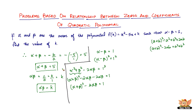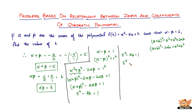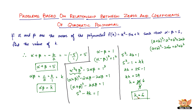So we substitute: (alpha + beta)² - 2·alpha·beta - 2·alpha·beta = 1, which gives (alpha + beta)² - 4·alpha·beta = 1. The reason we do this is we have the values of alpha + beta and alpha·beta. Alpha + beta is 5, so 5² - 4·k = 1, which gives 25 - 4k = 1.